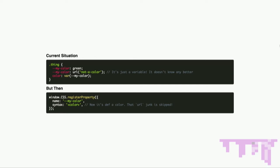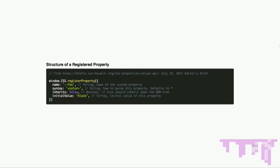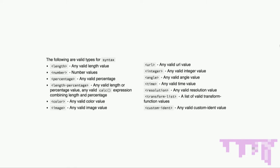Enter window.css.registerProperty. You can register a new property that CSS will then understand as a property. We're going to call it my-color and give it a syntax of color. Now that we know it's a color and we've registered it as a property, it will reject any value that doesn't match color. We have now created properly a new property. The structure of a registered property has a name, a syntax which defaults to allowing anything, whether the property inherits up the DOM tree, and an optional initial value.